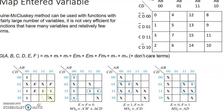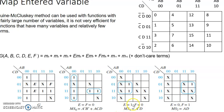To simplify this problem, first consider the additional variables e and f as zero. When both are zero, do the grouping of ones. These four in one group give ā·b̄, and these two in one group give a·c·d. So we get the terms from grouping ones along with don't cares.